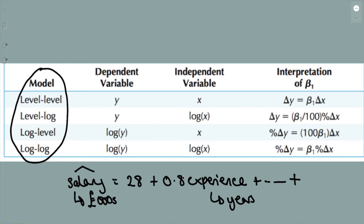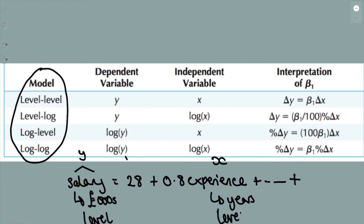The question may ask us to interpret the variable experience. We need to look at the y variable — that's salary — and this is our x variable, experience. Now, it hasn't mentioned that salary is in logs, so if it's not in logs it means it's in levels. And experience — again, I haven't said it's logged, so it's also level. That means the row we need to look at is the level-level row, because this is a level-level model.